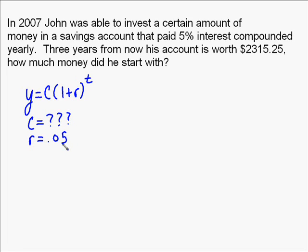We do know the rate though. It's 5%. So we always write that rate as a decimal. So instead of 5%, we write 0.05. We know the time. It says 3 years from now.